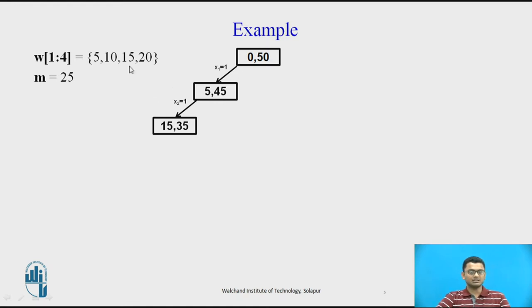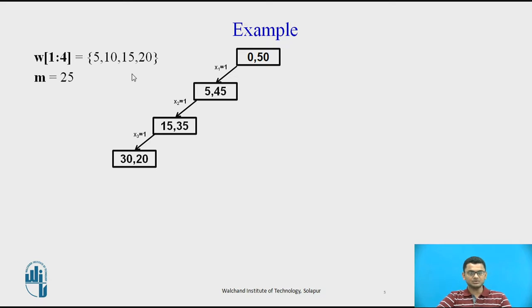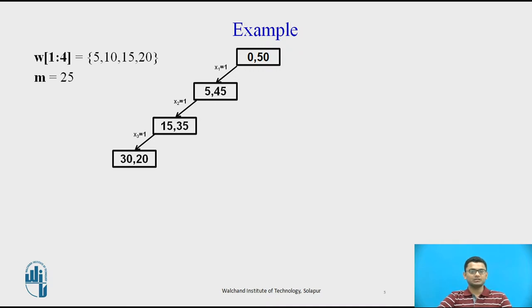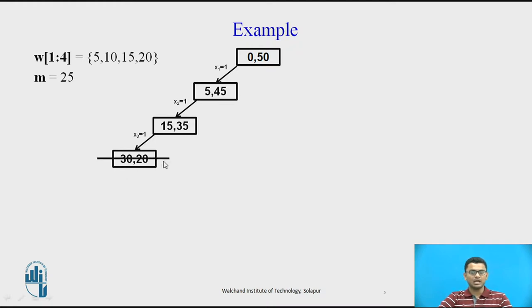Next we check what the subset will be when we add the third weight, denoted x3 equals 1. This gives us 15 plus 15 equals 30, and reducing 15 from 35 gives us 20, so the node is 30 comma 20. But we need to find subsets of value 25, not greater than 25. This node is infeasible, so we kill this path and do not continue the solution any further.